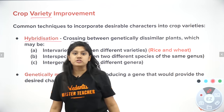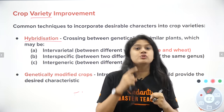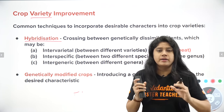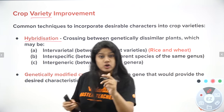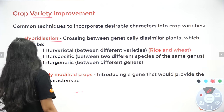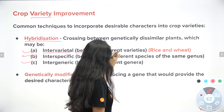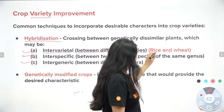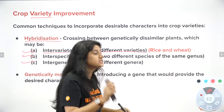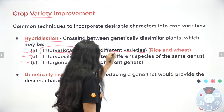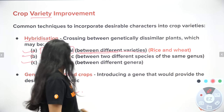For crop variety improvement, we increase variety through hybridization — mixing two great characteristic features to make one superior plant. The first type is intervarietal hybridization: crossing two different varieties, for example rice and wheat crossed together to get something amazing.